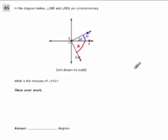Which means that if I add them up, I get 90 degrees, right? Complementary is for 90 degrees. So what is the measure? They ask here, what is the measure of angle FEG? And show your work.